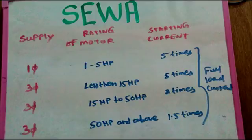This will be less than 15 HP, at 5 times full load current, so it will go above. If you have 50 HP in the 3 phase, it will be 2 times full load current. If you have 50 or above 50, it will be 1.5 times full load current.